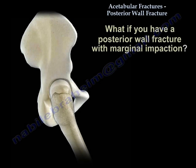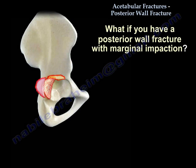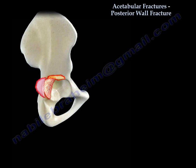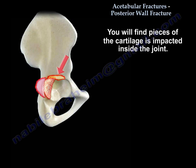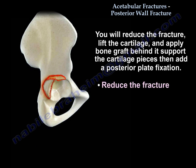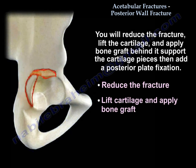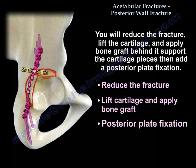If you have a posterior wall fracture with marginal impaction, you will find pieces of cartilage impacted inside the joint. You will reduce the fracture, lift the cartilage, and apply bone graft behind it to support the cartilage pieces, then add posterior plate fixation.